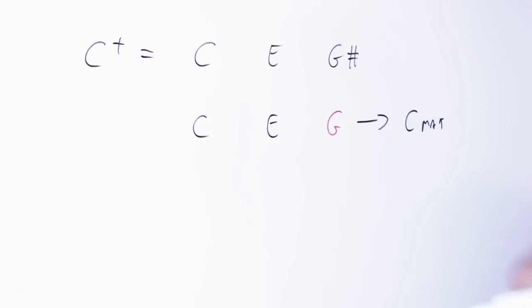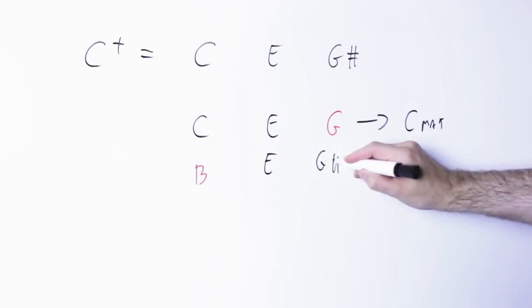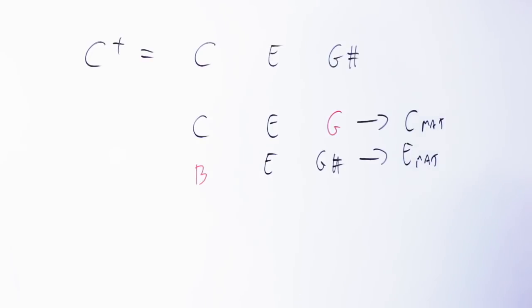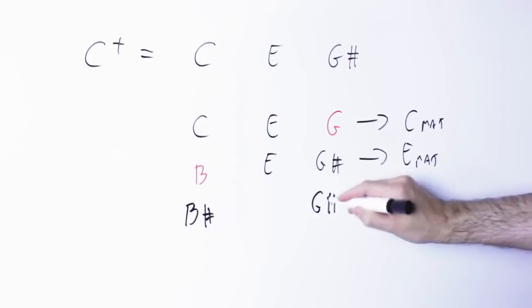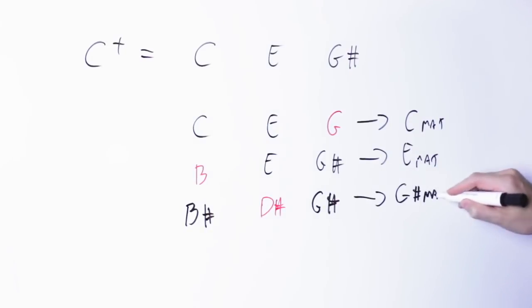But if I move the C note down a half step, I get an E major chord, E, G sharp, B. And if I move the E note down a half step, I get a G sharp major chord, G sharp, B sharp, D sharp.